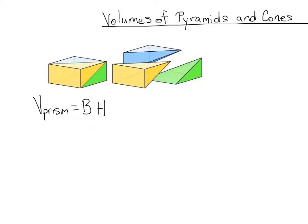So you may already know that, but what you may not know is the fact that if I take my prism I can create three congruent pyramids with that prism. And that's the case for any type of prism.